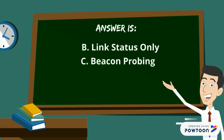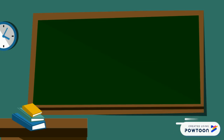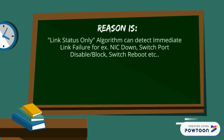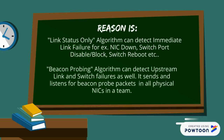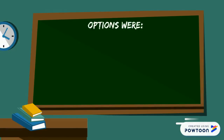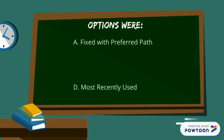The reason is: the link status only algorithm can detect immediate link failure, for example NIC down, switch port disable, block switch reboot, etc. The beacon probing algorithm can detect upstream link and switch failures as well. It sends and listens for beacon probe packets on all the physical NICs in a team.